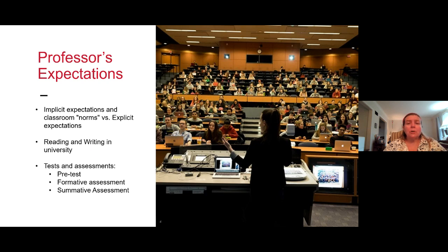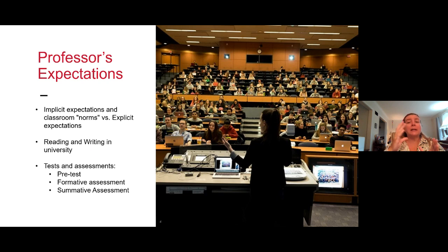Moving on to explicit expectations — Jenny touched on some of these already. The two main ones are your course outline, which tells you how much each assessment is worth and when things are due, and assignment rubrics, which break down exactly what you're graded on and how much each section is worth. These are the tools that help you figure out where to focus your time, and they connect directly with your weekly schedule.